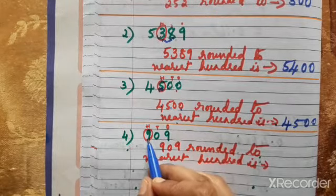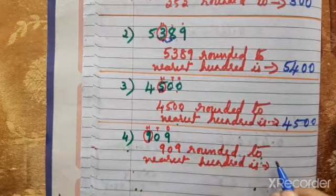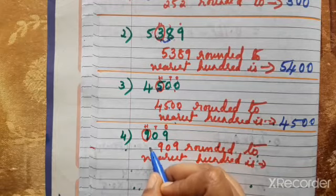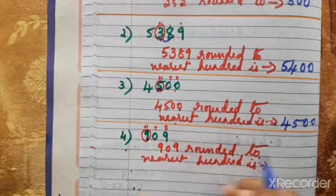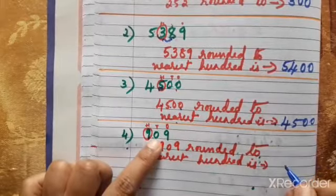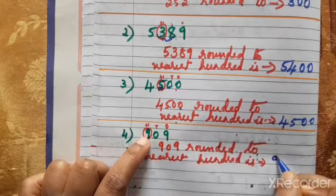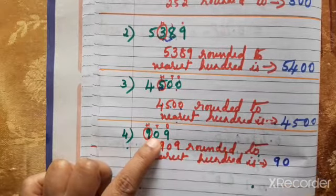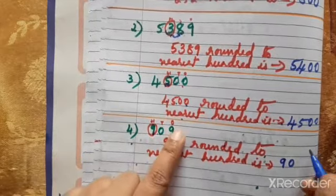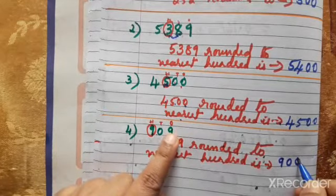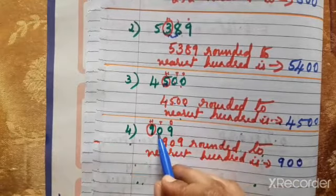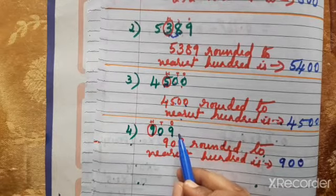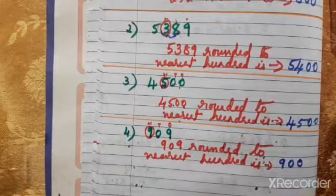We are rounding 9 in the hundreds place of 909. Knock the door — the next digit is 0. Ask: do you have five or more? Zero means very poor, can't help. So 9 stays the same. Once door knocked, the digit after becomes zero. So the 9 in units place also becomes zero.